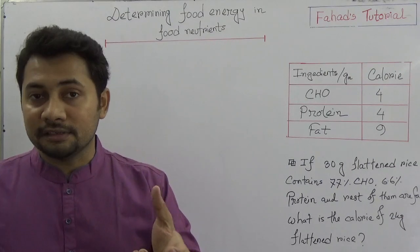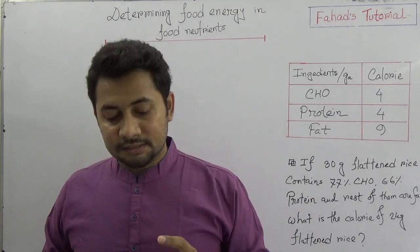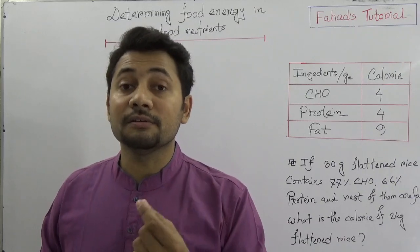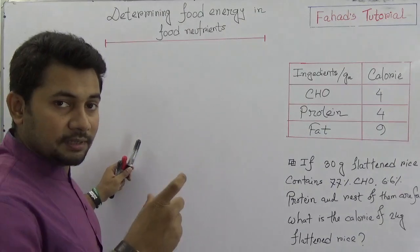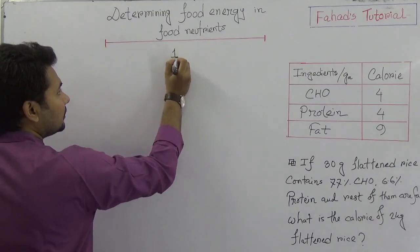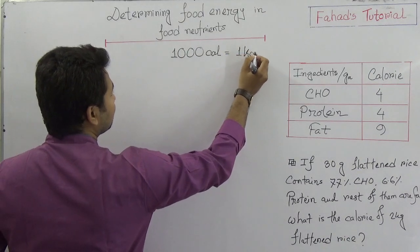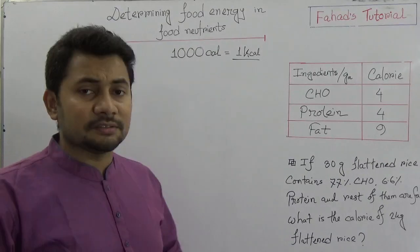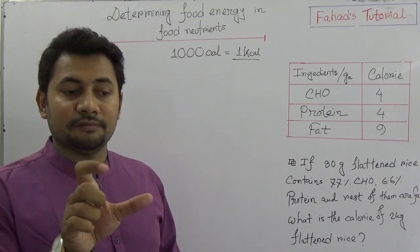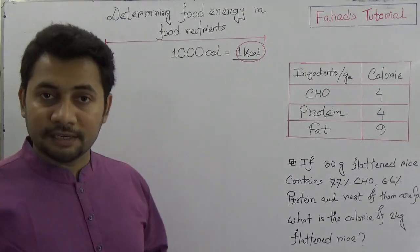That means the calorie or joule in the food nutrients. Nutritionists usually use the unit kilojoule or kilocalorie, which is actually the unit of heat as a form of energy. We must know that one thousand calories is one kilocalorie. Whatever you see on any food packet, the unit used is kilocalorie.